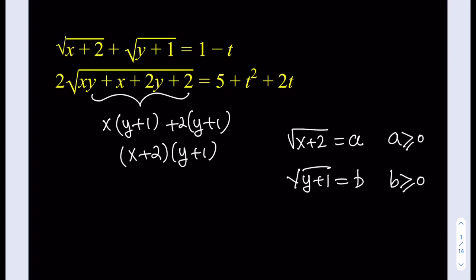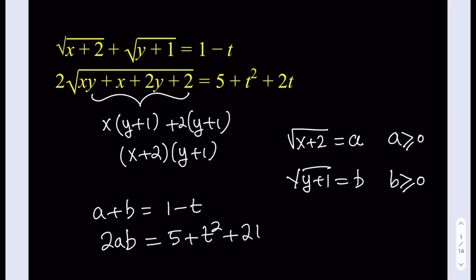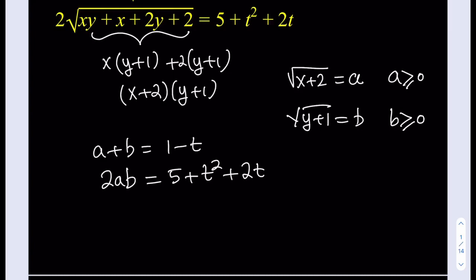After doing these substitutions, we get a much simpler system. We get a plus b equal to 1 minus t. And from the second expression, since we have the product of a and b, we get 2ab equal to 5 plus t squared plus 2t. Dividing the second equation by 2 gives us ab equal to (5 plus t squared plus 2t) over 2.